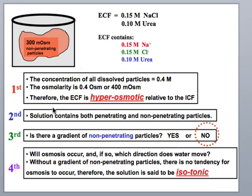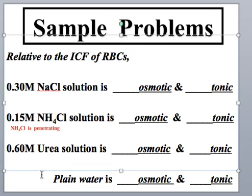Let's continue to the next slide where we're looking at several different types of examples. We have a 0.3 molar solution of sodium chloride. We can work through that.